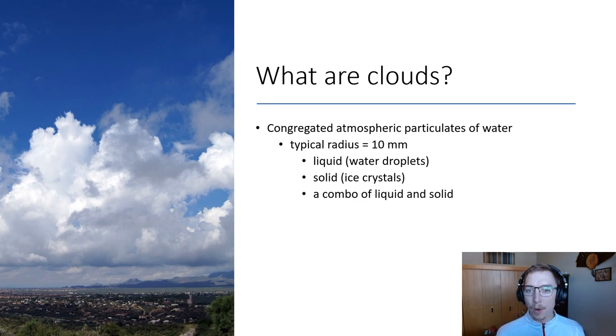Now if we recall from some of our previous videos, our brief intro to clouds, clouds are just congregated atmospheric particles of water. Typical radius somewhere around 10 millimeters per particle or particulate, with liquid, solid, or a combination therein. So water droplets or ice crystals or some combo is really all clouds are. That picture on the left there, what we're seeing, that's just congregated atmospheric particulates of water. So there's some type of nucleus, there's some type of deposition that occurs on that nucleus, and then we've got a cloud.